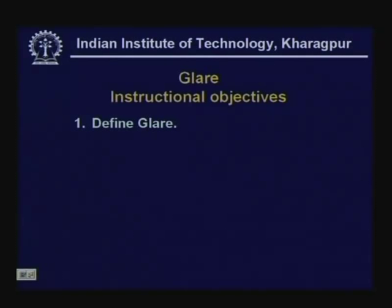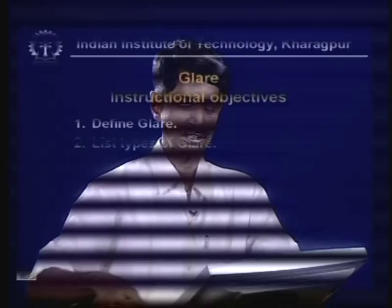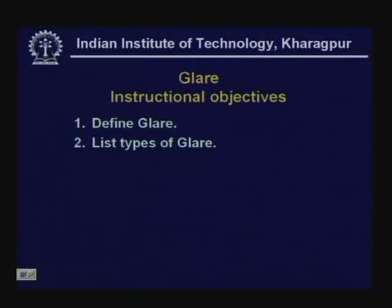The instructional objectives have been defined. The first is: what is GLARE? Recall that we mentioned, as far back as the lecture on the eye, that any bright object in the line of vision tends to obscure our vision — first and foremost it deters us from observing what we are supposed to observe. Secondly, it may injure the eye or cause fatigue, and this bright source of light in the line of vision is what we call glare. The second objective is to list types of glare.